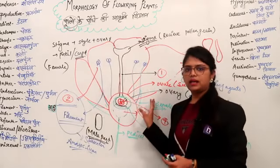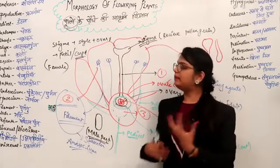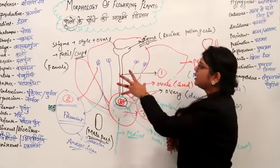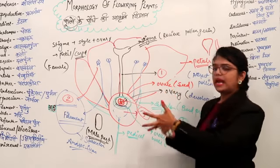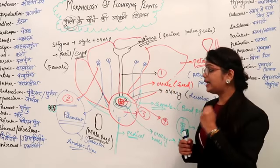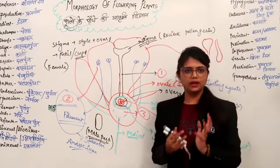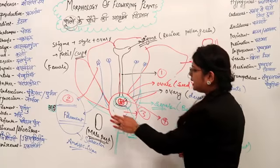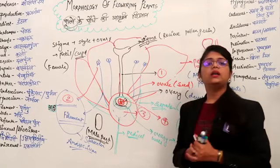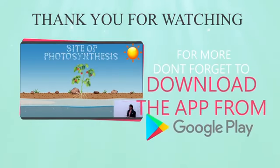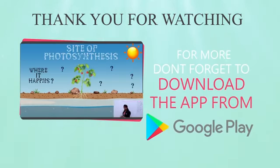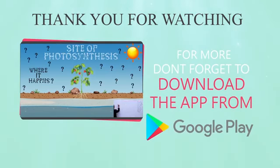So this was the basic structure of the flower. After this, we will see what each individual structure does — Stamen, Androecium, Gynoecium, Carpels, Calyx, and Corolla — what are their functions? We will also understand what Corolla and Calyx are. We'll see you next time.